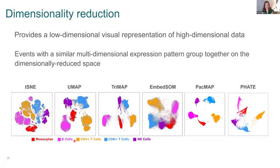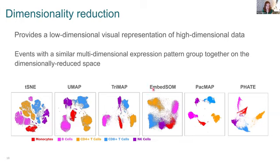Going back to dimensionality reduction — this is primarily for data visualization. We have a number of these available in FlowJo: t-SNE, UMAP, EmbedSOM, Trimap, PacMap, and FATE. t-SNE and UMAP are probably the most well-known. t-SNE is popular because it was one of the first dimensionality reduction tools used in flow cytometry and it flattens data really nicely, giving good local structure — we can see the resolution inside islands very well.